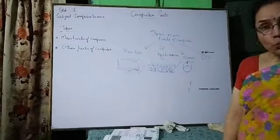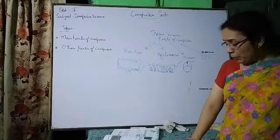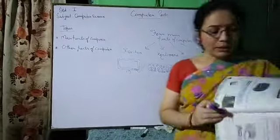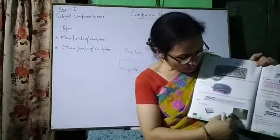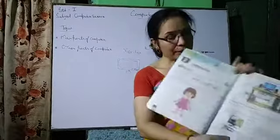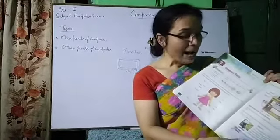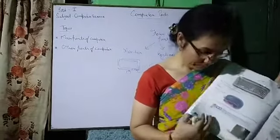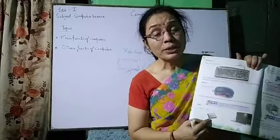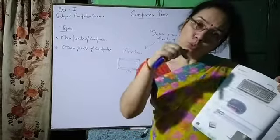The next part is CPU — central processing unit. CPU is the brain of the computer. It is always present inside the CPU box — that box you can see under the table. Inside the CPU box, there is one small part called CPU, central processing unit. So CPU is always present inside the CPU box.